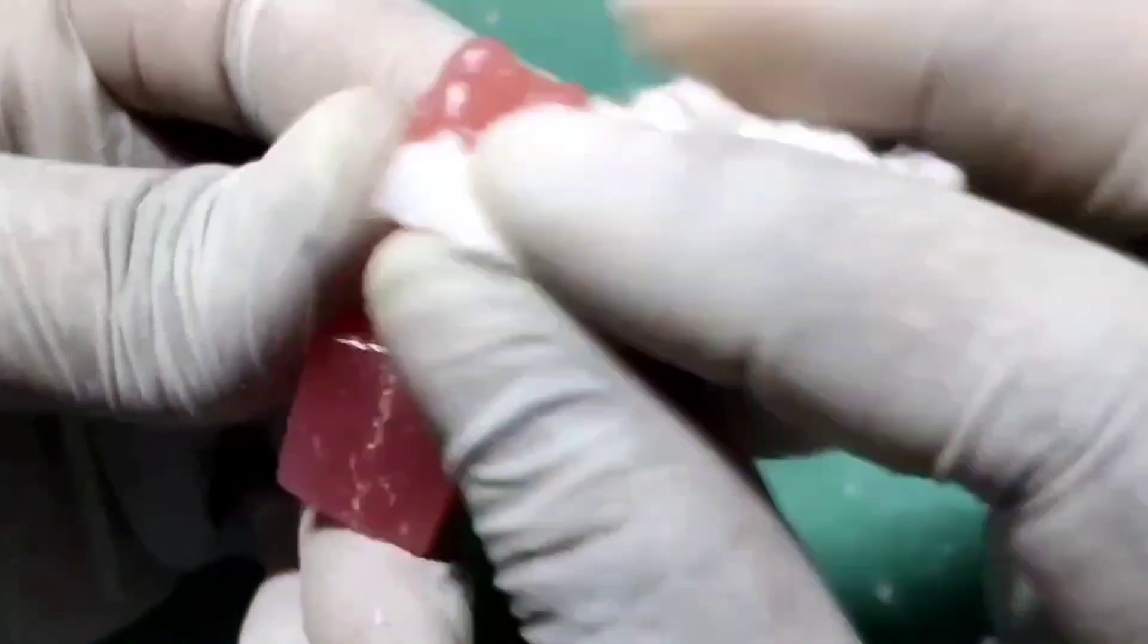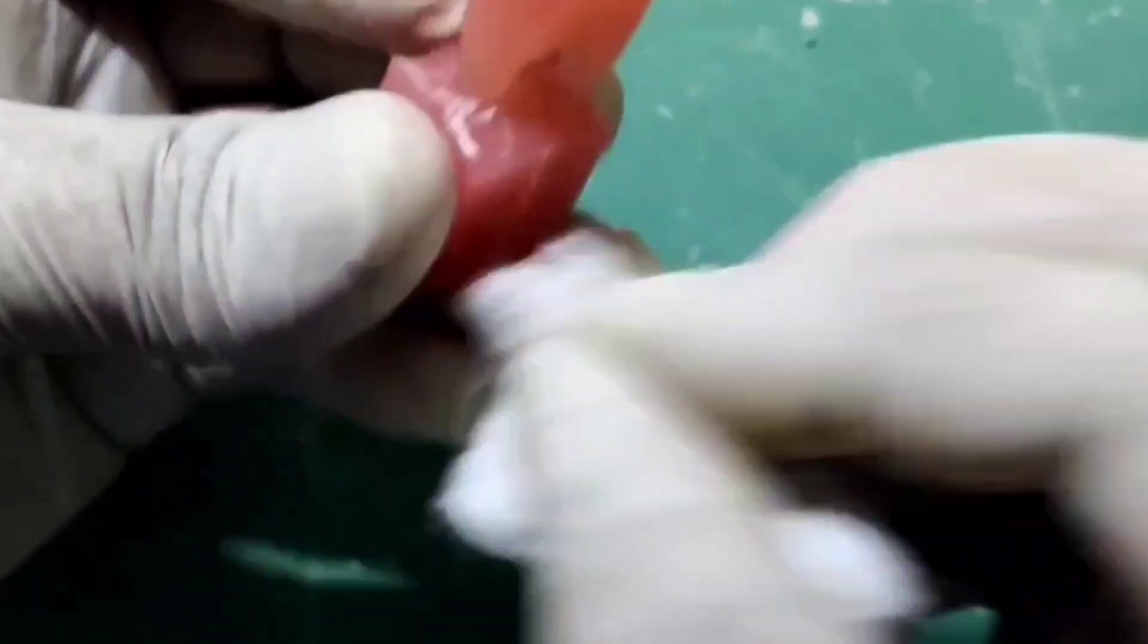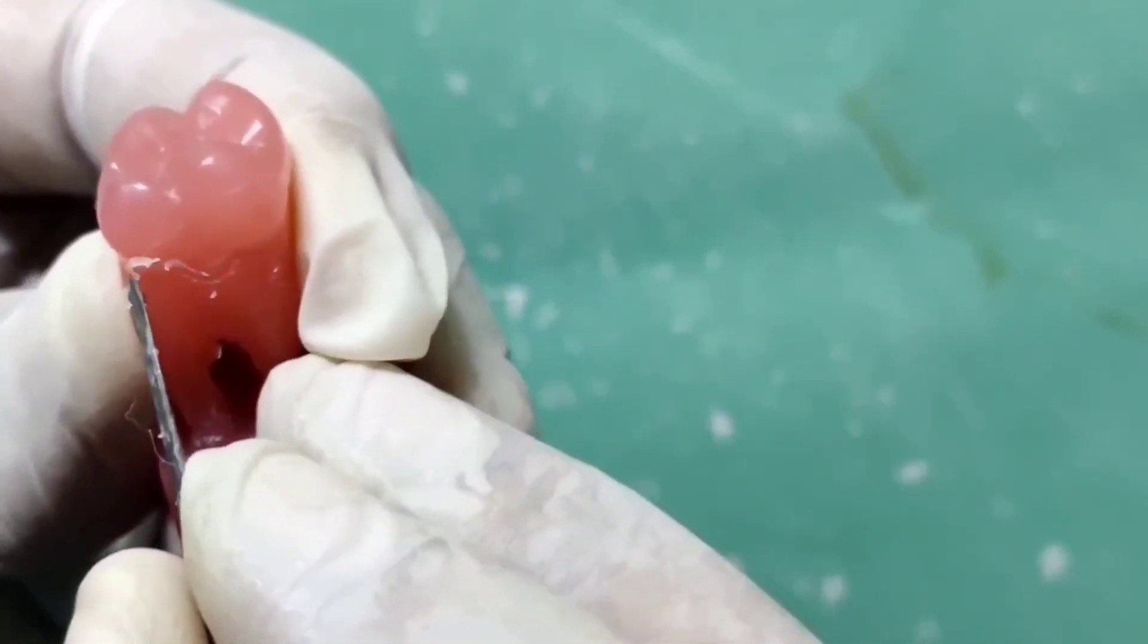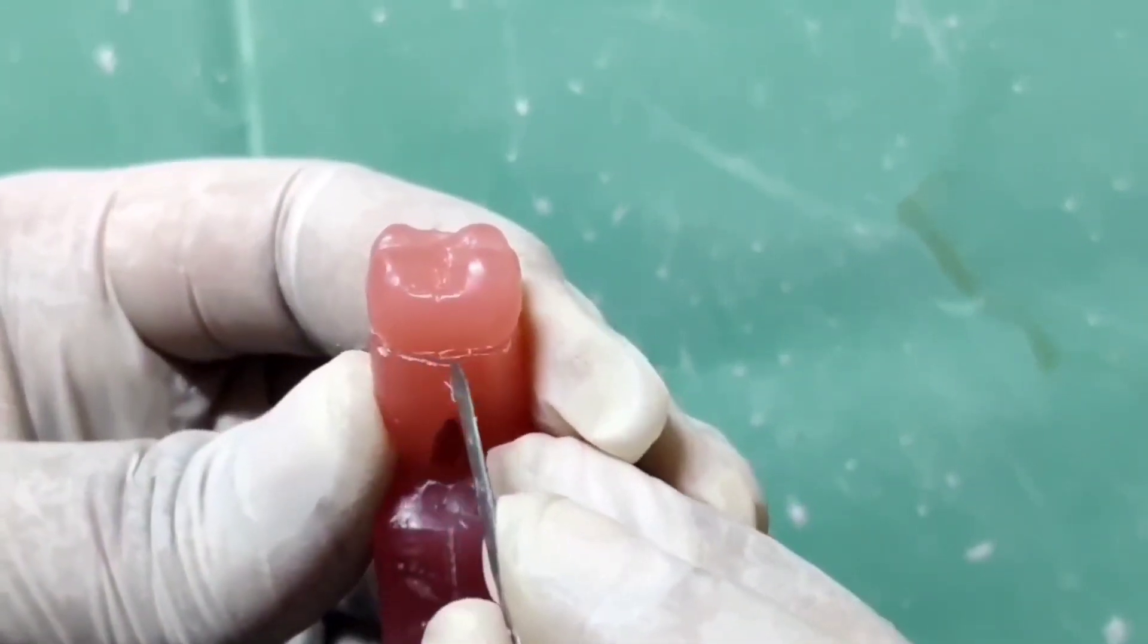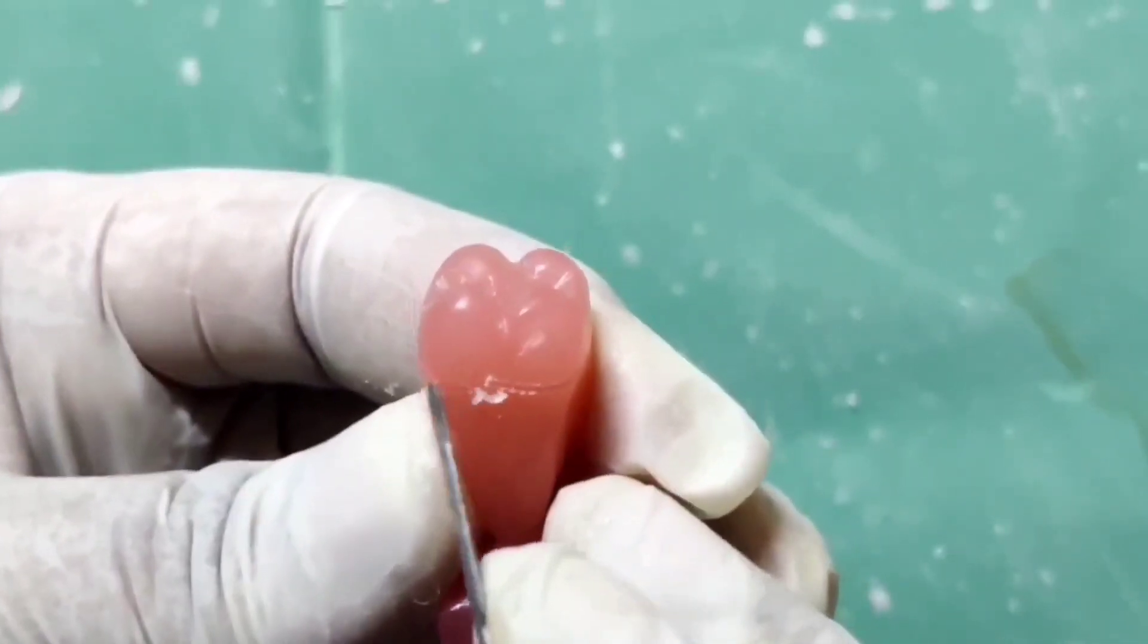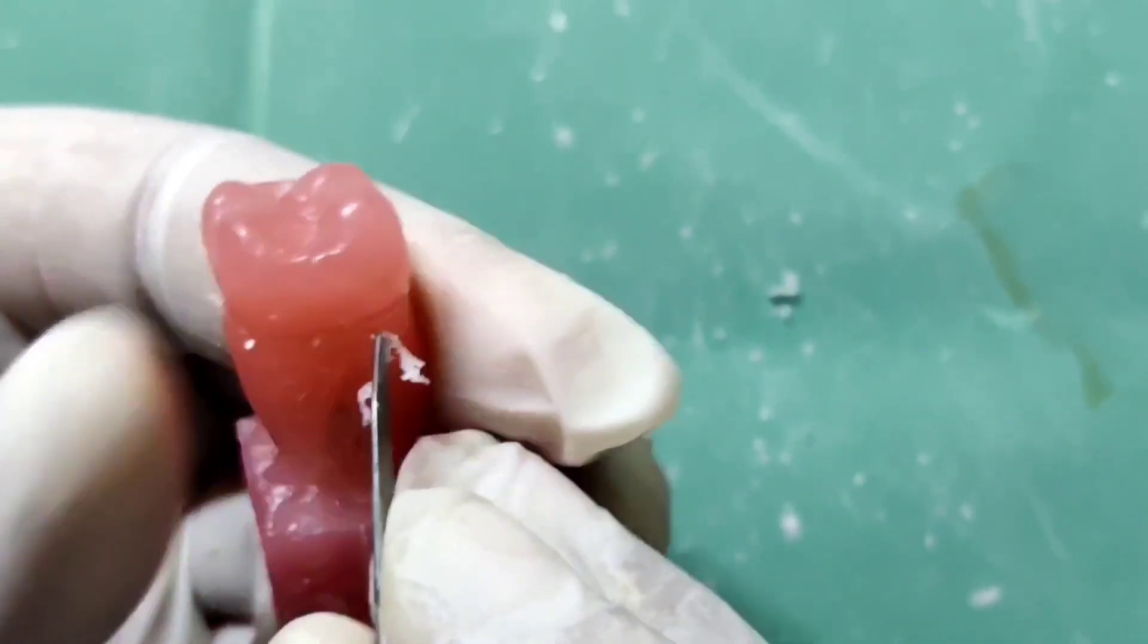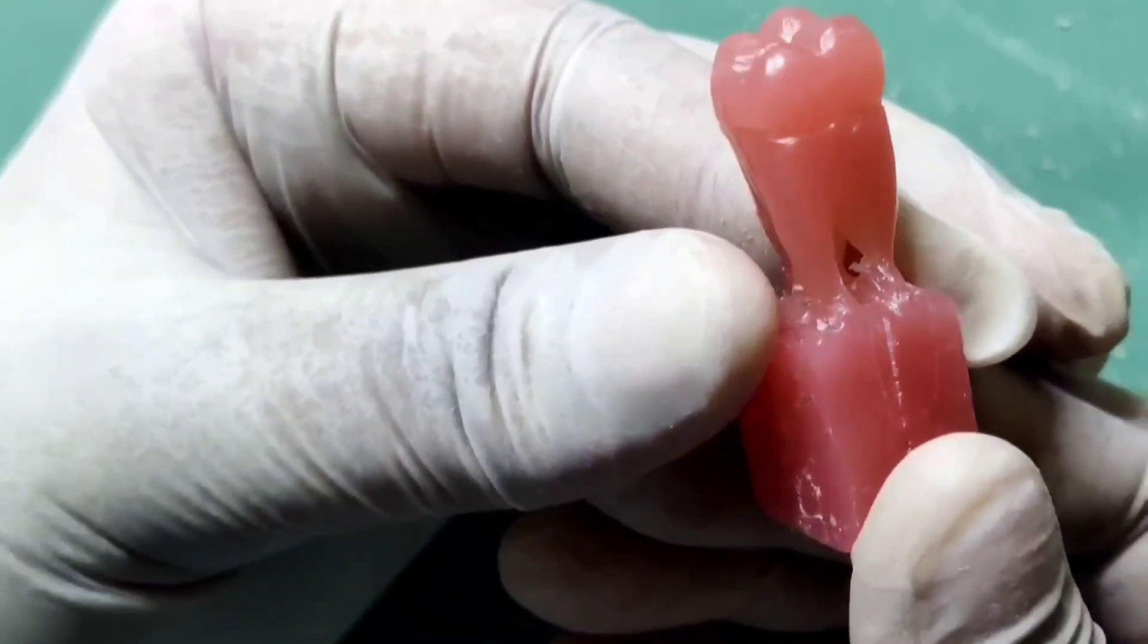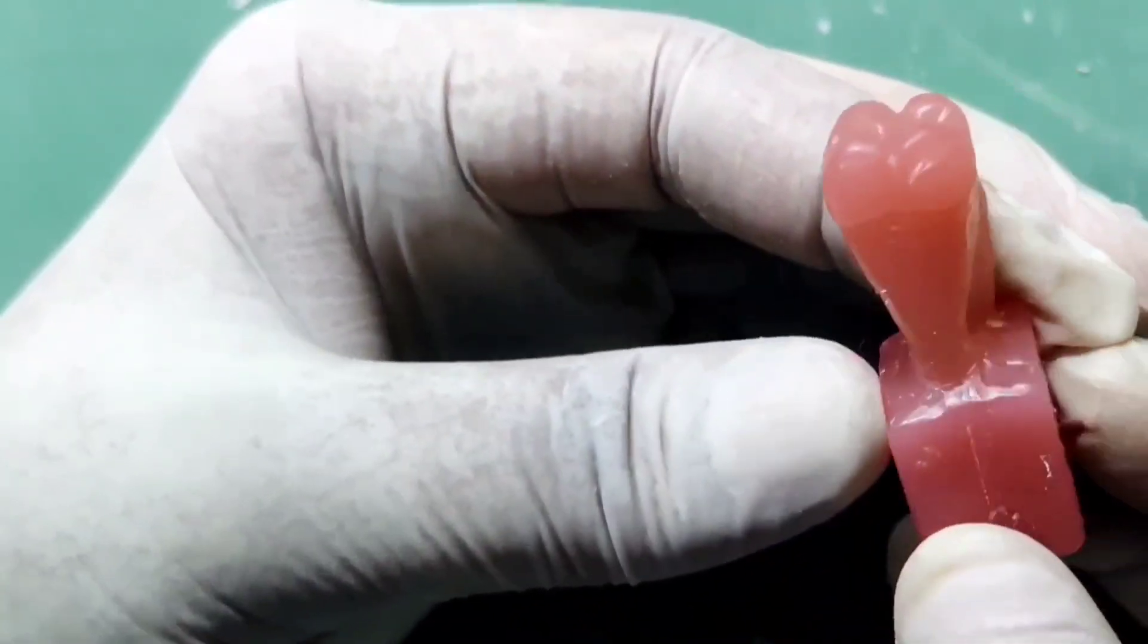Now let's polish the tooth. Let's draw the cervical outline which is 1mm below in the mesial side.